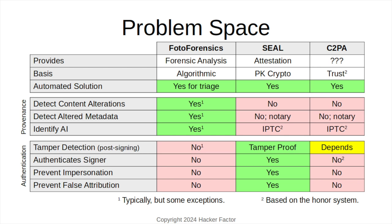And then there's C2PA. They claim it provides provenance and authentication — that's the P&A in the name. But they have yet to provide any examples with reliable provenance or unimpeachable authentication. The basic problem is that C2PA is based on trust and the honor system.